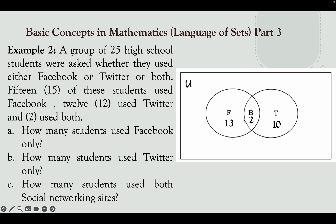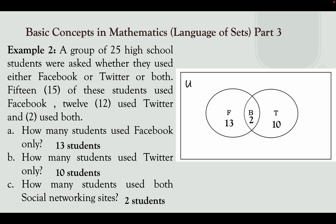Let's add them up: 13 plus 2 equals 15, plus 10 equals 25. That means there are no students who do not use social networking sites. So the answers are: 13 students used Facebook only, 10 students used Twitter only, and 2 students used both Facebook and Twitter.